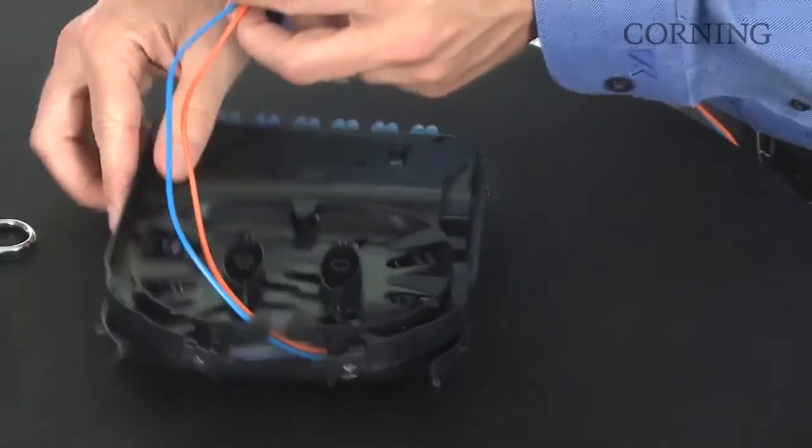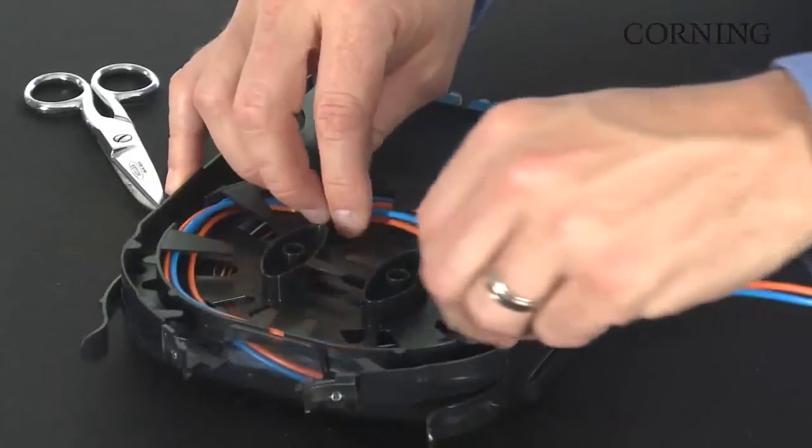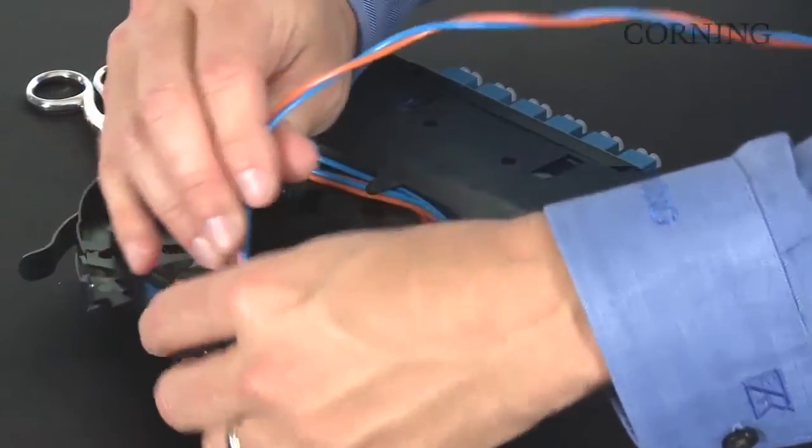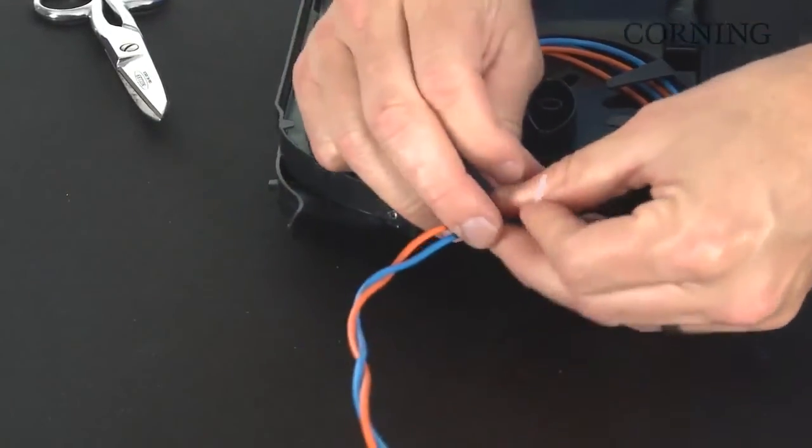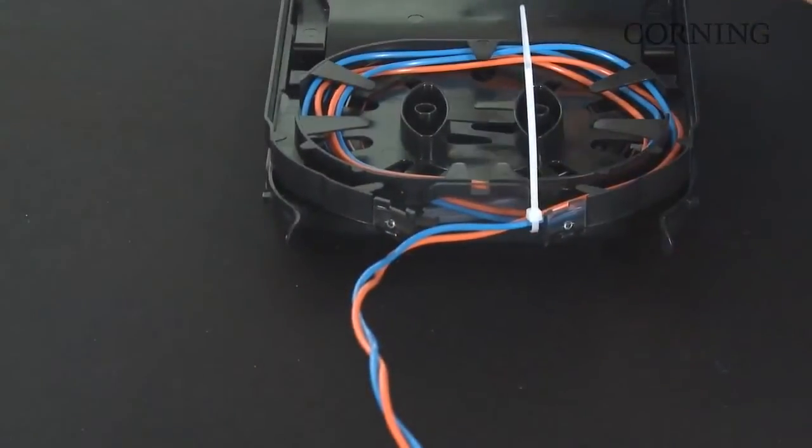The last step is to utilize the built-in slack management on the bottom side of the pigtailed cassette. Loop and store up to 38 inches of cable or buffer tube slack under the flanges with an S-shaped bend or half figure eight.